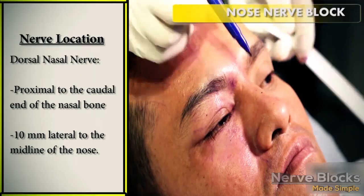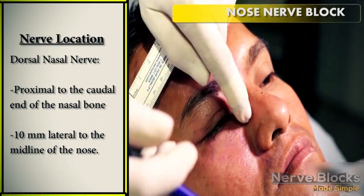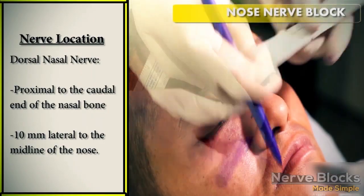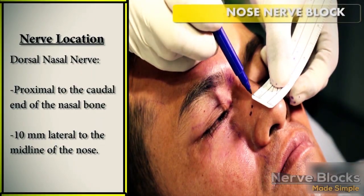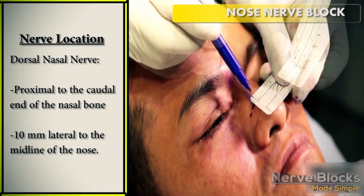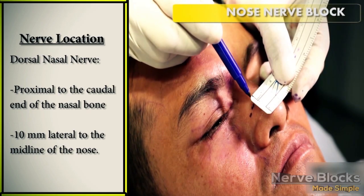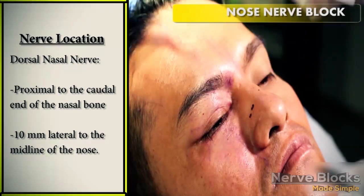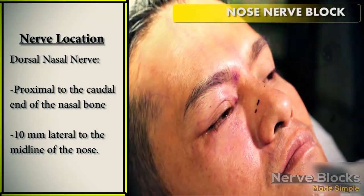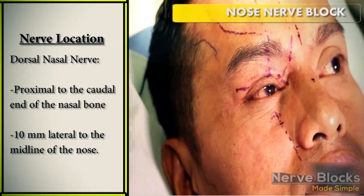The dorsal nasal nerve is located proximal to the caudal end of the nasal bones. It is found 10 mm lateral to the midline of the nose.